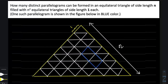As you can see in the diagram, there is a big equilateral triangle of side length n, and it has been filled up with equilateral triangles of side length one each. Now why does the question setter say that there are n² equilateral triangles?